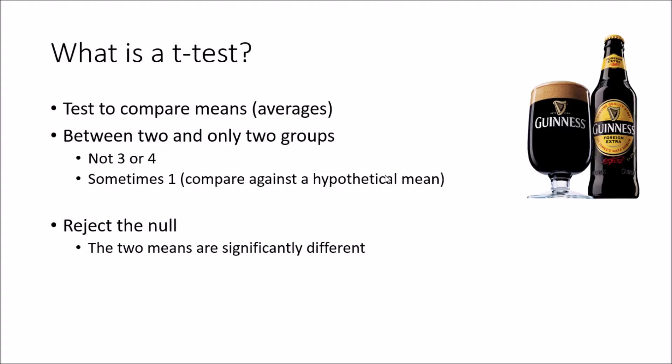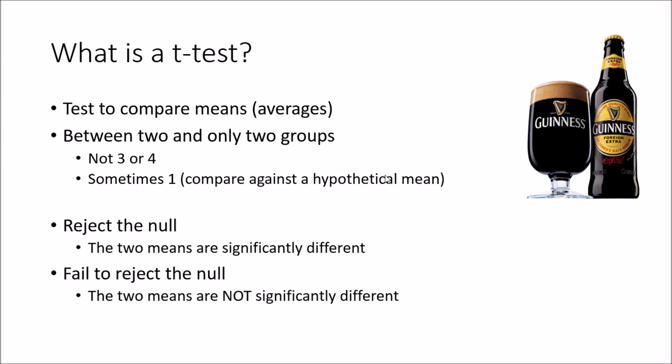If they are significantly different, then we can reject the null. If they are different but not significantly so, then we do not reject the null. We never accept the alternative hypothesis, we never accept the null. We just reject the null or fail to reject it.